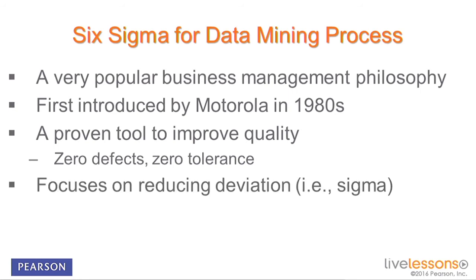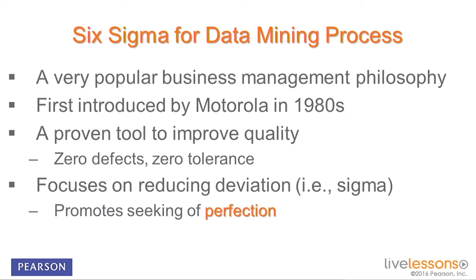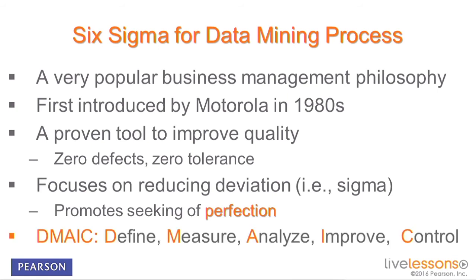Six Sigma focuses on reducing variation, because variation is your enemy in production and service systems. You want to standardize systems in such a way that you produce high-quality products and services every time. As a philosophy, Six Sigma promotes perfection — never being satisfied with what you get, but always looking for ways to improve your processes to reach a better and better state.